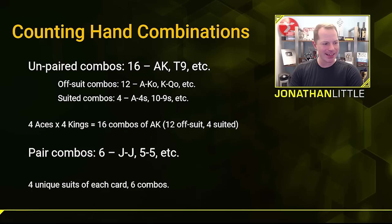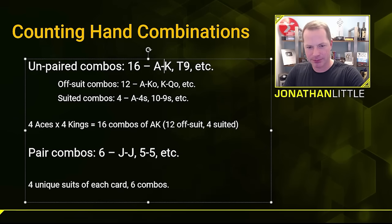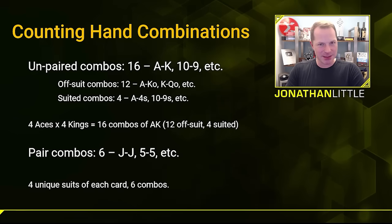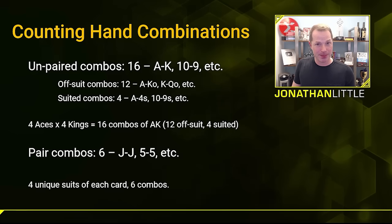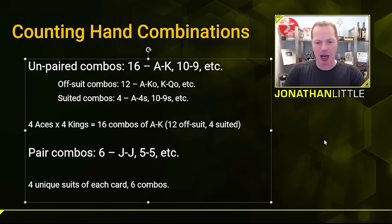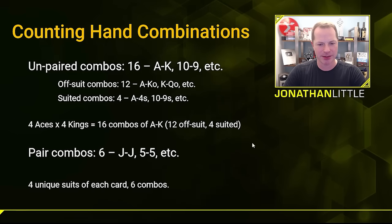Next, let's discuss counting hand combinations. There are 16 combinations of each unpaired hand, such as ace-king, 10-9, etc. There are 12 of each offsuit hand and four of each suited hand. For example, there are four ace-four suited combinations, and 12 ace-four offsuit combinations. To do a little bit of math: you take the four aces and multiply by the four kings to get 16 combinations — 12 of them are offsuit and four are suited. You take however many there are of each card and multiply them together. For pairs, there are six combinations of each pair.